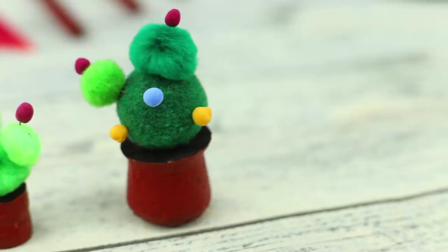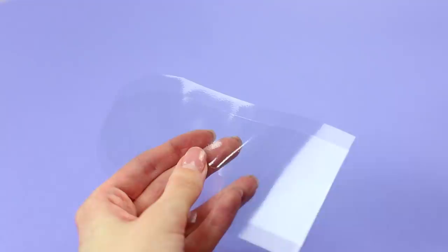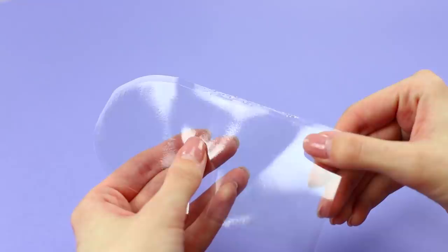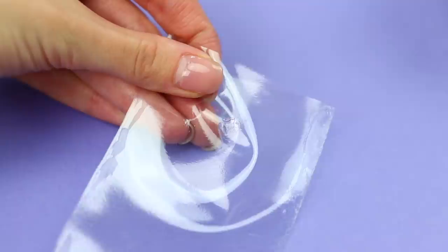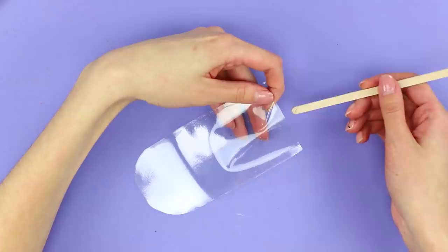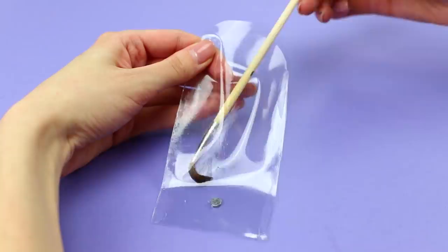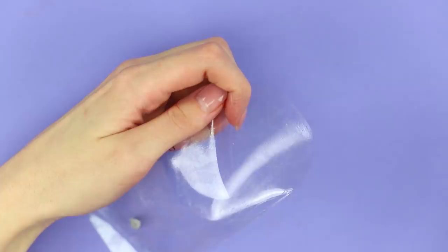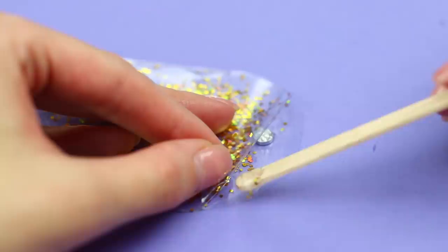And now you need a ziplock bag. Cut two pieces like these out of plastic. Glue them together with super glue on both sides. Glue on a magnet. Coat the walls with glue and pour sparkles inside. Fasten another magnet on the other side. Coat the edges with glue.